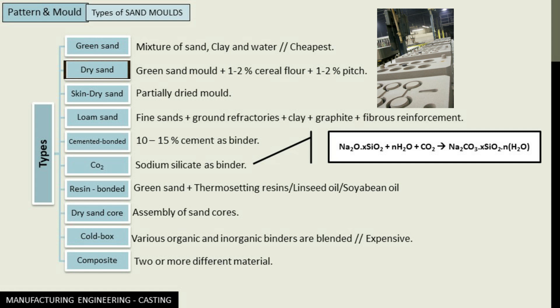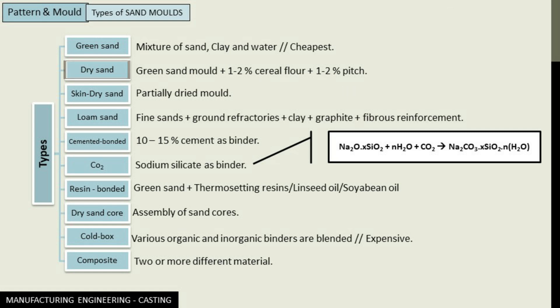However, it also contains 1 to 2% of cereal flour and 1 to 2% of pitch as additives. Now additives are the materials that are added in small quantities to the molding sand in order to enhance its existing properties and to impart to it special properties.